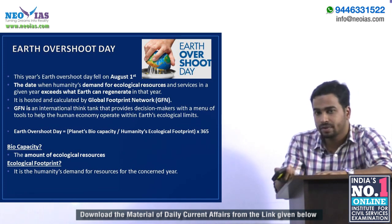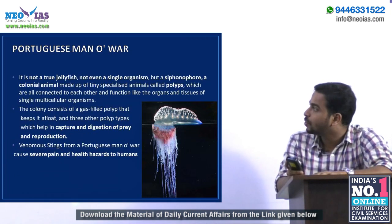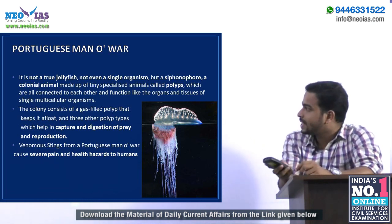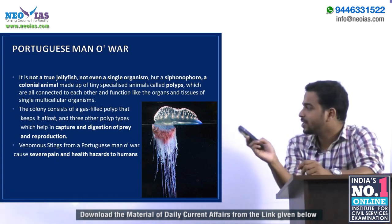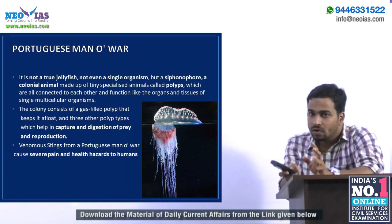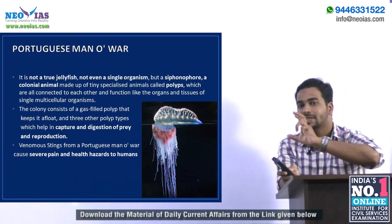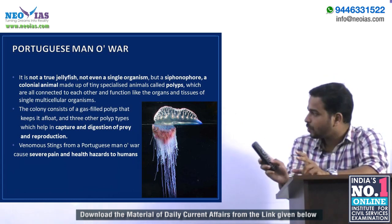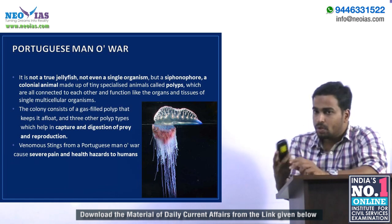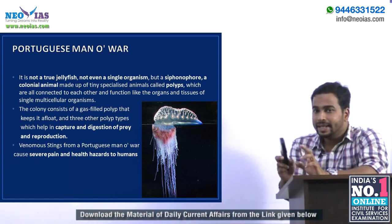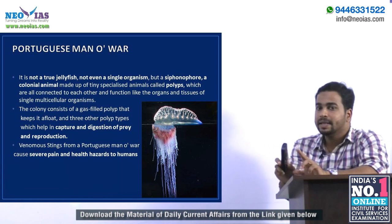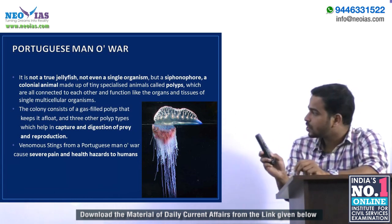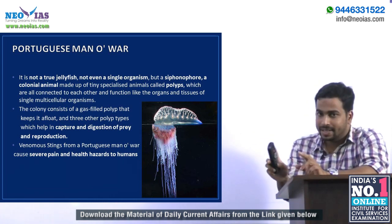The next topic is the Portuguese Man-of-War. The picture looks like a jellyfish but it is actually not a jellyfish. It is a colonial animal made up of organisms called polyps. It is a colony of polyps, where each polyp has a particular function. Three or more polyps come together and act as single organs, and together they make up the whole organism.